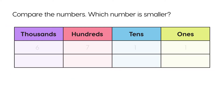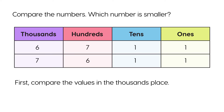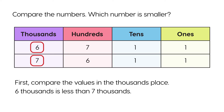Compare the numbers. Which number is smaller? First, compare the values in the thousands place. Six thousands is less than seven thousands. So, six thousand seven hundred and eleven is smaller than seven thousand six hundred and eleven.